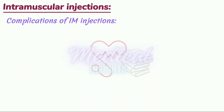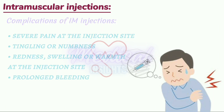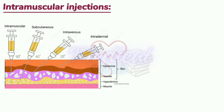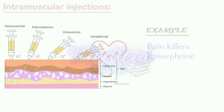Complications of intramuscular injections include severe pain at the injection site, tingling or numbness, redness, swelling or warmth at the injection site, and prolonged bleeding. The injection angle should be 90 degrees. Examples for intramuscular injections are certain painkillers and epinephrine in life-threatening anaphylactic reactions.